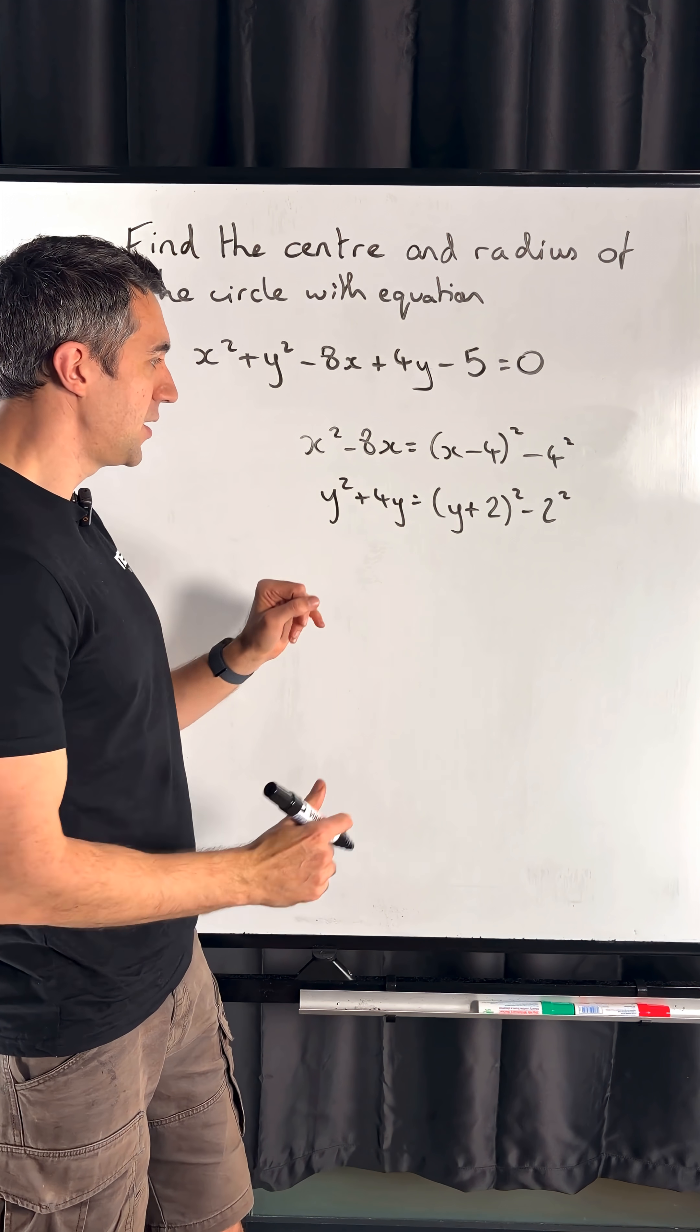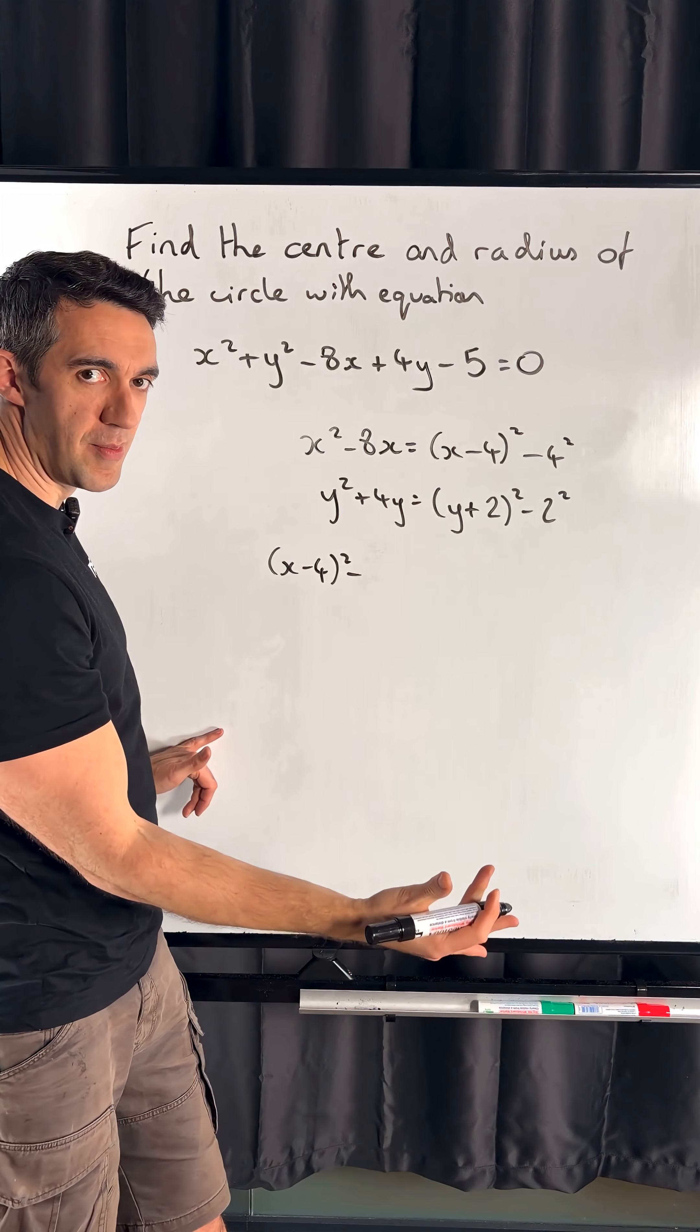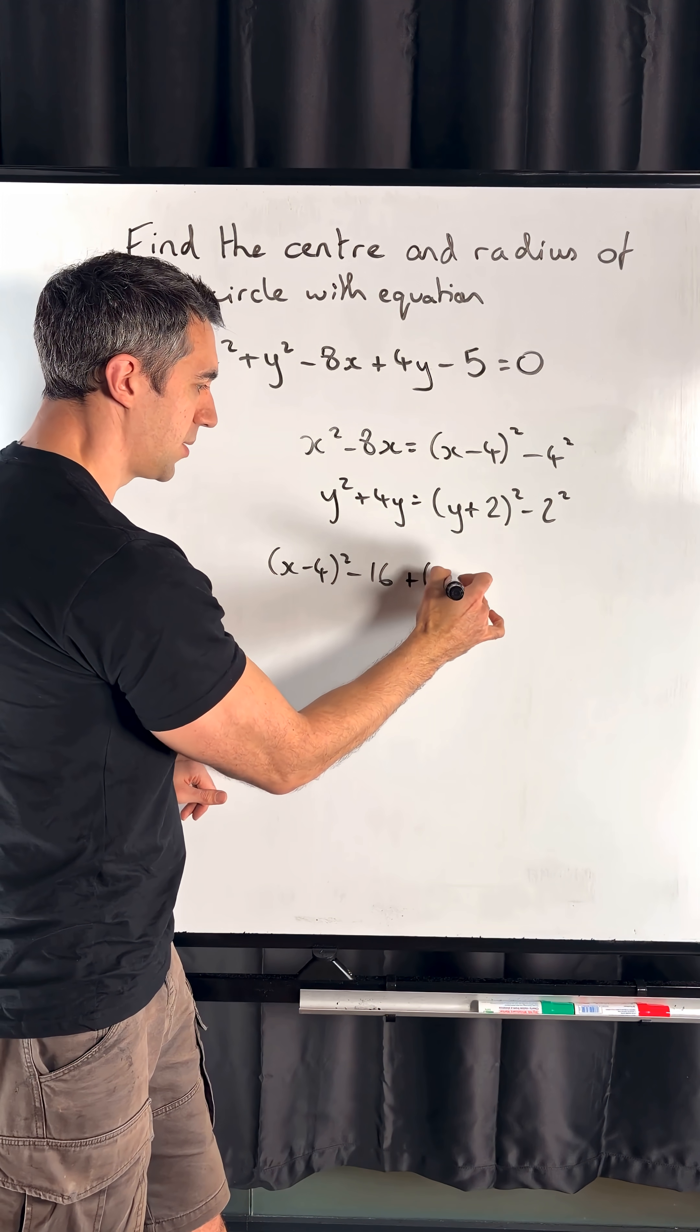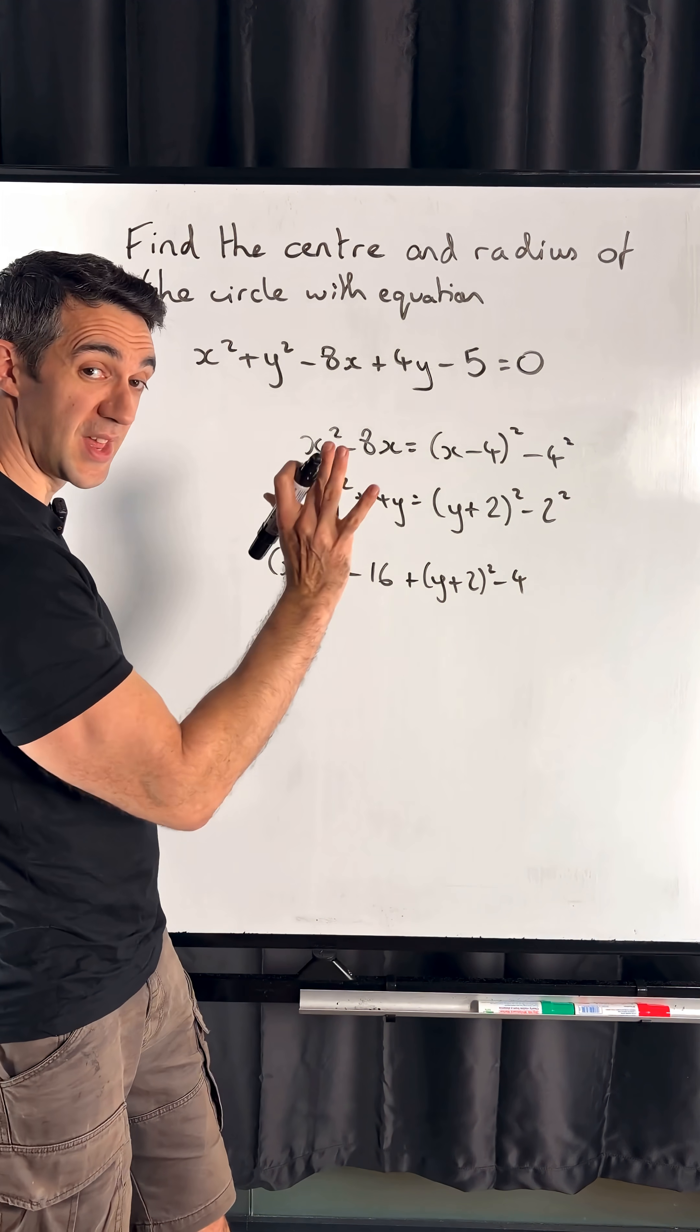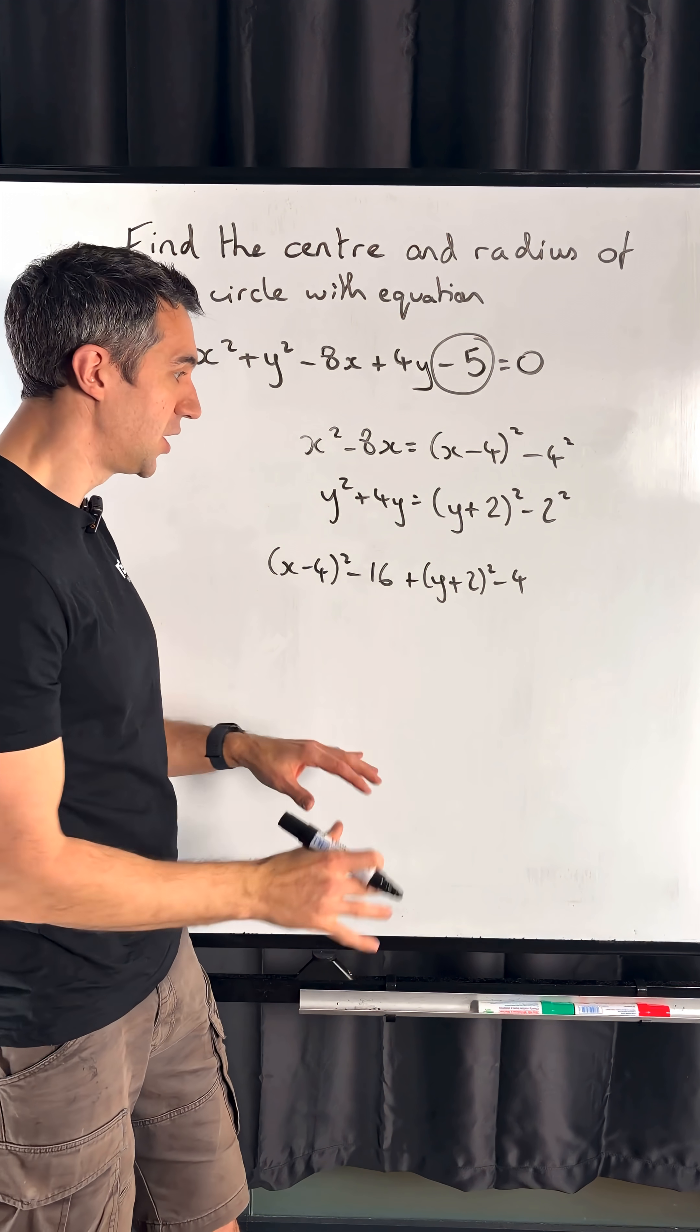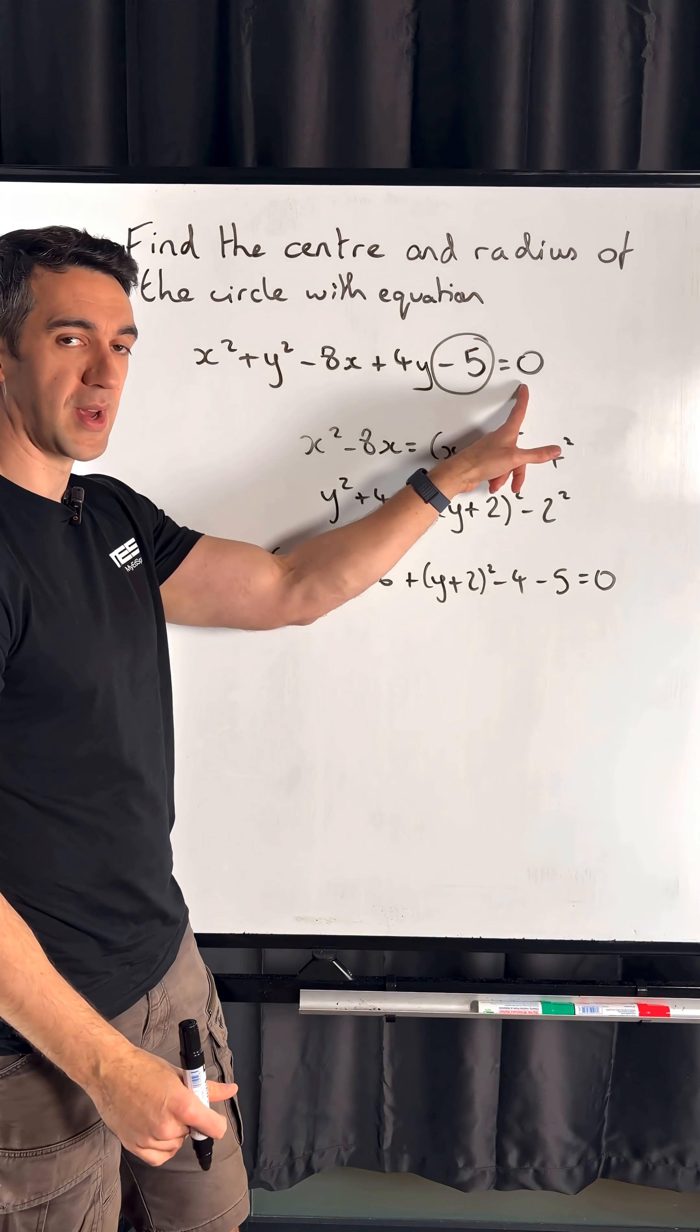Now we're going to write these two things together as part of our equation. So we've now got x minus 4 squared—I'll put my minus 16 now from my 4 squared here—plus y plus 2 squared, put my minus 4 from there, and then I have to make sure I don't forget this minus 5. Easily done while completing the square; need to make sure I have my minus 5 as well.